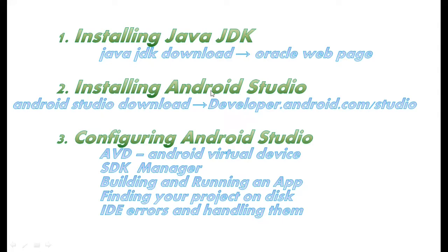The next step will be Android Studio. You Google Android Studio download, find the official web page, and download the latest version. You install it — I won't go into details because it's just the same as installing any other app. You follow the instructions, click next, read the terms and conditions, and that's it. Once Android Studio is installed, we will open it and discuss the following steps.